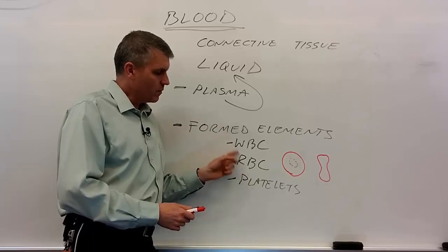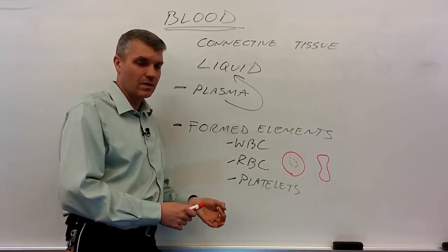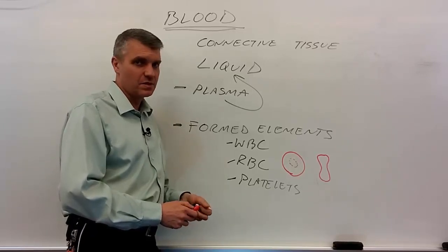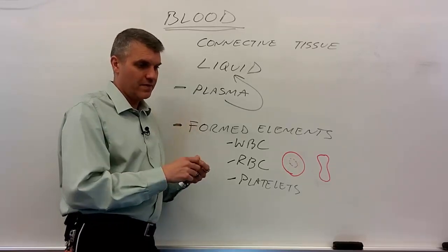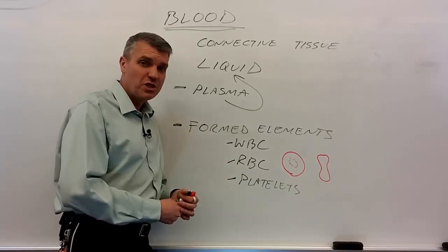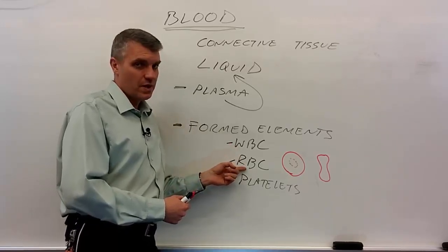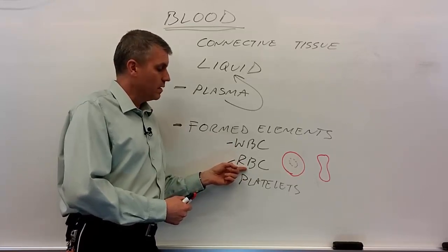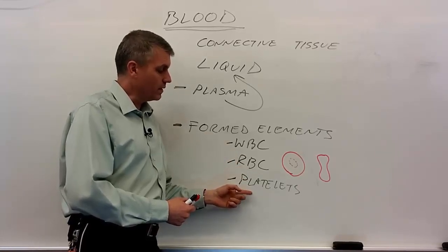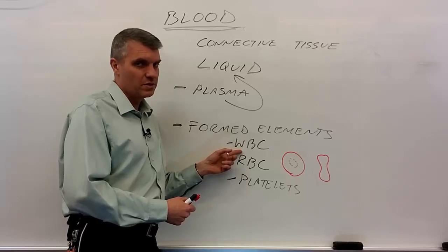All three formed elements come from the same type of stem cell called a myeloid stem cell, or hemocytoblast. That stem cell is multipotent — it divides and can give rise to any of the three formed elements. In terms of concentration in the blood, red blood cells are the most concentrated, then second are platelets, and lastly white blood cells, which have the lowest concentration.